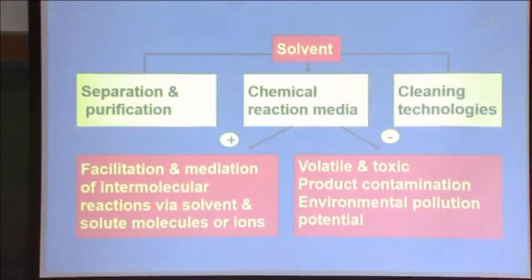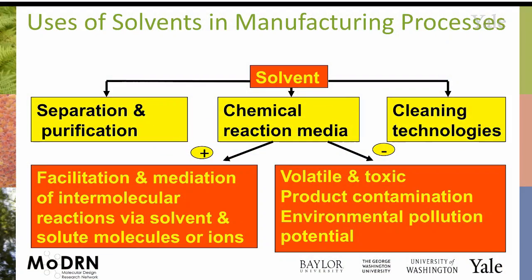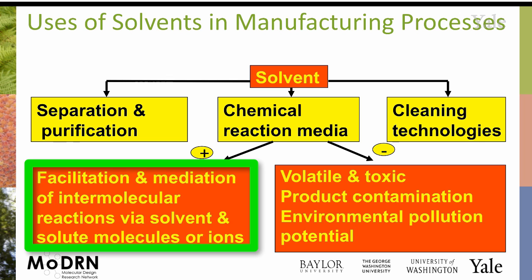Digging down into why you want to use solvents, there are advantages and disadvantages. On the positive side, the number one reason people generally want to use a solvent is because it helps molecules come in contact with each other. If you have two solids, it's often very difficult to get one molecule of solid A to meet up with one molecule of solid B so they can have a reaction.